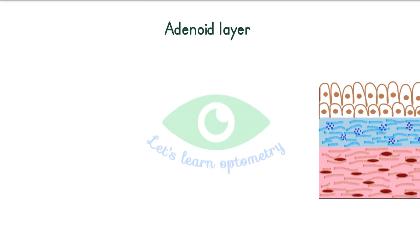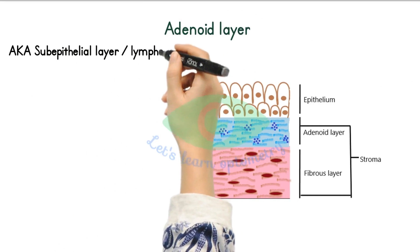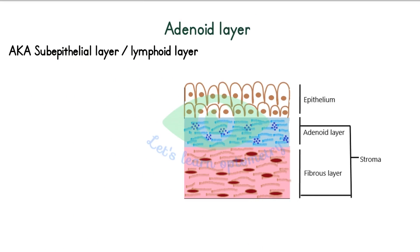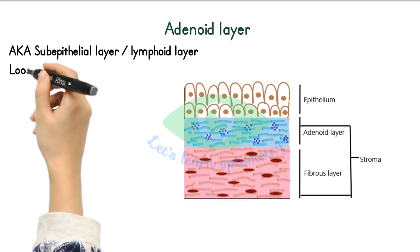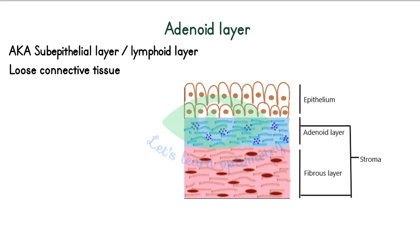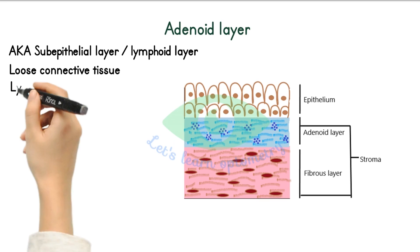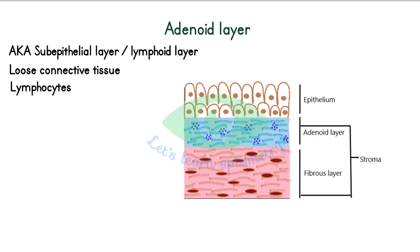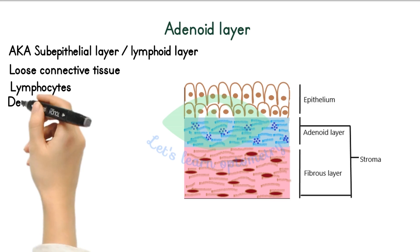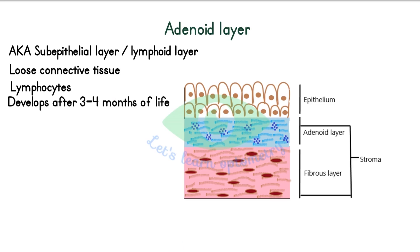The adenoid layer, also known as the sub-epithelial or lymphoid layer, consists of fine connective tissue reticulum in the meshwork of which lie lymphocytes. This layer is most developed in the fornix. It is not present since birth but develops after three to four months of life. For this reason, inflammation in the conjunctiva does not produce a follicular reaction in an infant.